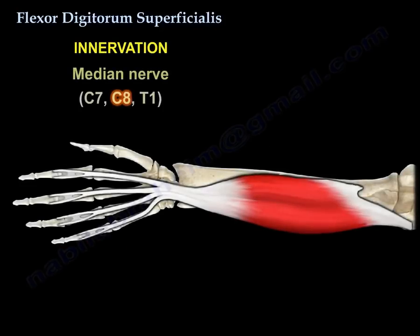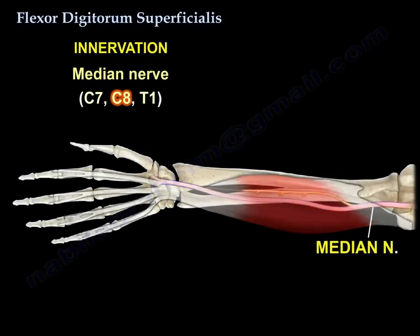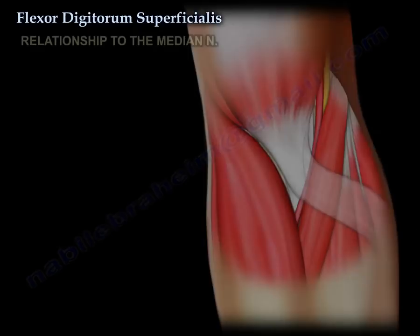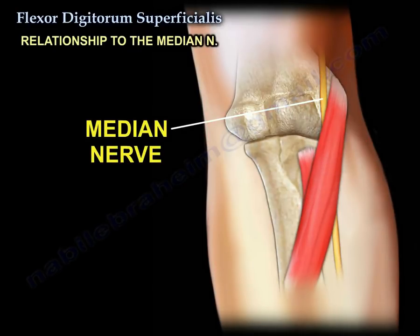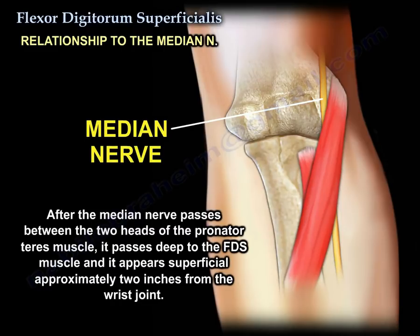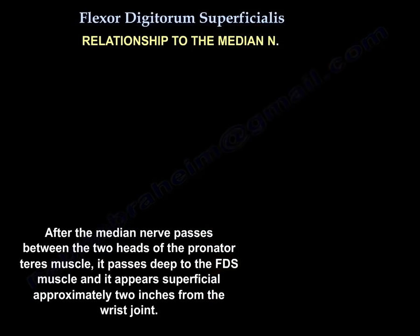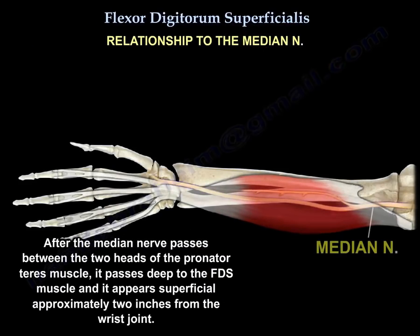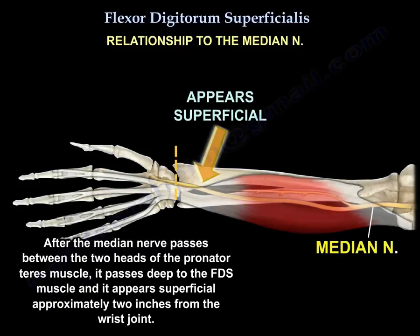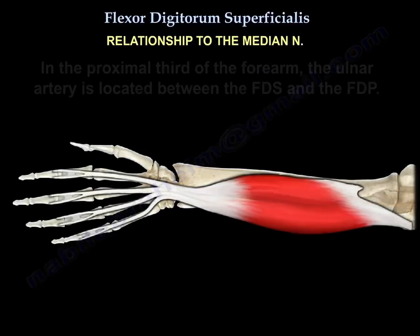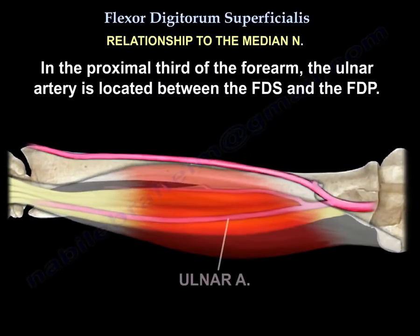Nerve supply: the median nerve. Regarding its relationship to the median nerve — after the median nerve passes between the two heads of the pronator teres muscle, it passes deep to the flexor digitorum superficialis muscle and appears superficial approximately two inches from the wrist joint. In the proximal third of the forearm, the ulnar artery is located between the flexor digitorum superficialis and the profundus.